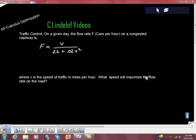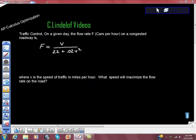Okay, so it's AP Calculus, another optimization problem. This is a traffic control problem, and we're told that on a given day, the flow rate F (cars per hour) on a congested roadway is F equals V over 22 plus .02 V squared, where V is the speed of traffic in miles per hour, and we're asked to find what speed will maximize the flow rate on the road.